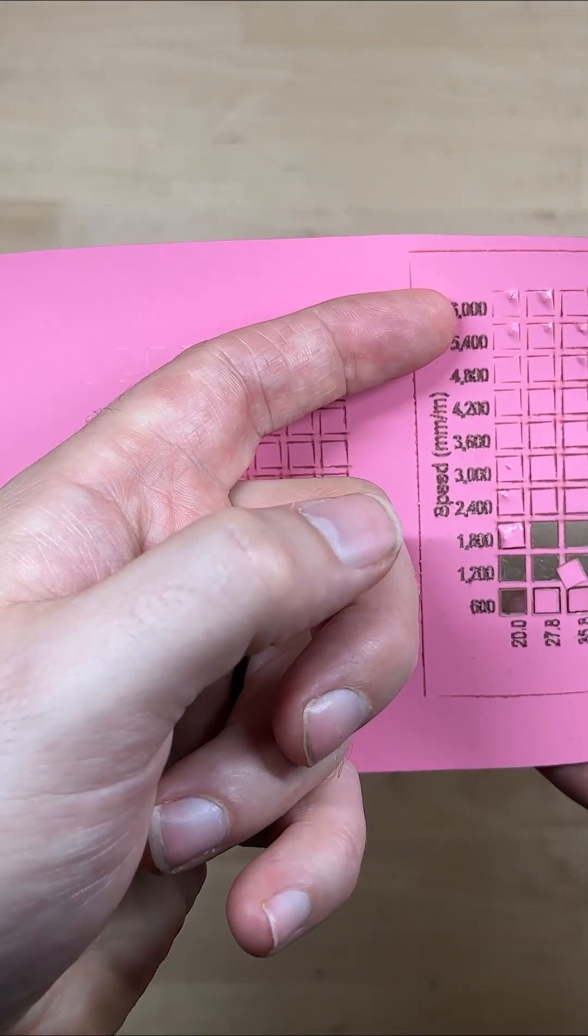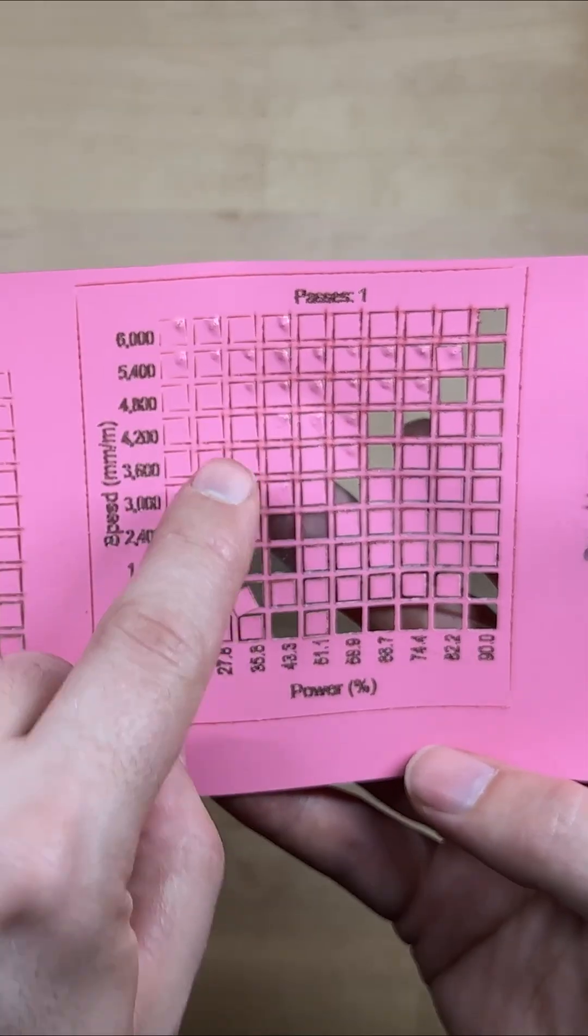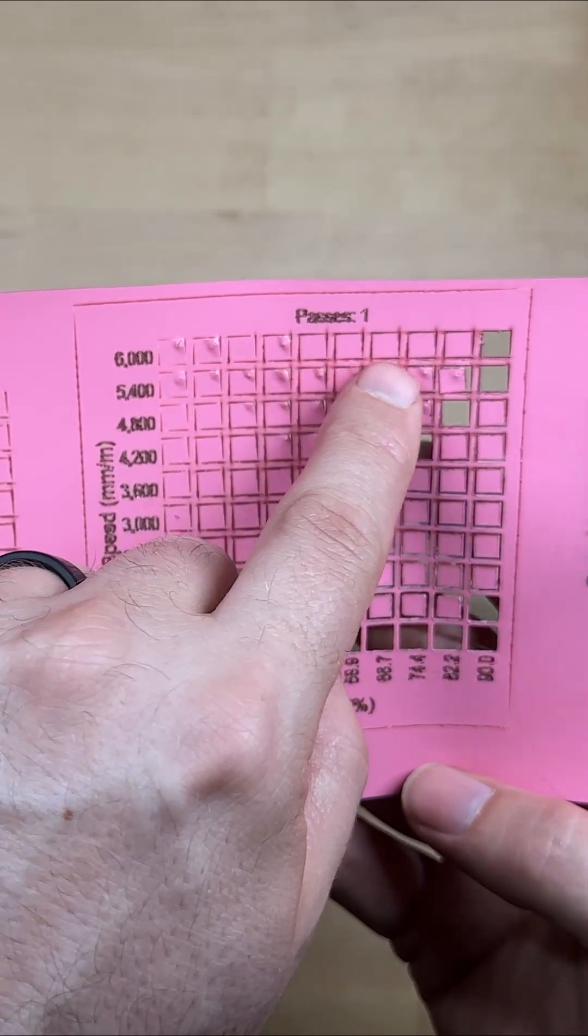6,000 was the maximum speed and 600 was the slowest speed. Then what I did was I tested to see which one of these would be weeded the easiest.